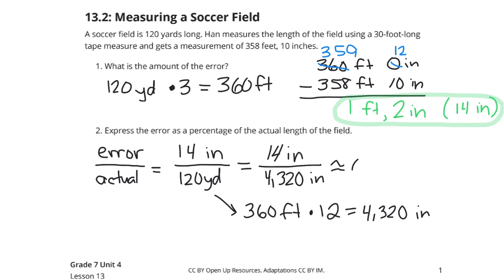And we get about this crazy little decimal here, 0.00324. And if we take this and move our decimal point over two spots to the right, we're going to end up with 0.324 percent error.